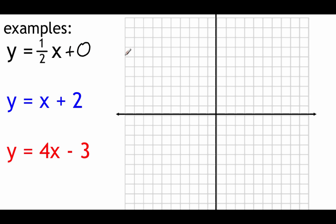Here are three equations we're going to graph, all written in y equals mx plus b slope-intercept form. The very first one, y equals one half x — it doesn't look like there's a b value, so we assume it's like a plus zero on the end. When graphing slope-intercept equations, we always start with the y-intercept first — it tells us where our graph crosses the y-axis. This one is crossing at zero, so we start right here at the origin.